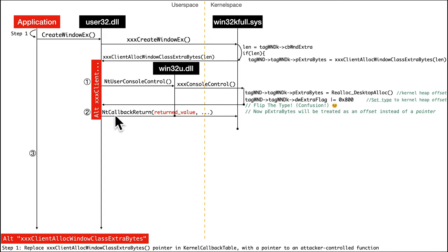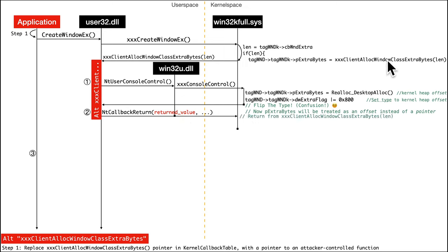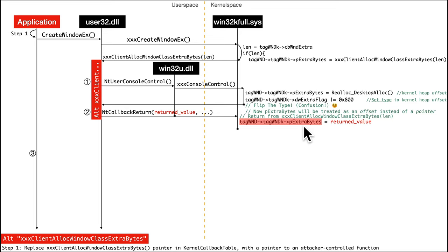Then the attacker calls NtCallbackReturn, which is supposed to end this user space callback. They get to choose a completely arbitrary attacker-controlled value, and that will be passed into kernel space. This is the actual return from that function — and that is the assignment that occurs: an attacker-controlled value into the tagWND tagWNDK pExtraBytes field. That is now ACID — attacker-controlled input data.